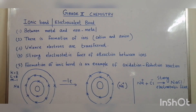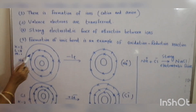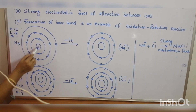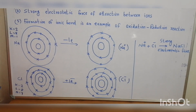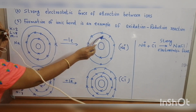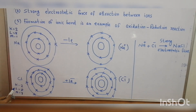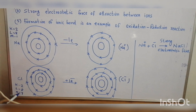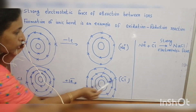An ionic bond is formed between a metal and a non-metal. In sodium, there are 2 electrons in the K shell, 8 electrons in the L shell and only 1 electron in the M shell. If sodium loses its outermost electron, it gains 8 electrons in the outermost shell and is converted to a sodium cation. Chlorine has 2 electrons in the first shell, 8 in the second shell, and 7 electrons in the valence shell. If chlorine gains 1 more electron, it attains 8 electrons in the outermost shell and is converted to a chloride ion.